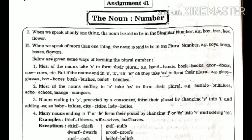First, when we speak of only one thing, the noun is said to be in the singular number. You already know singular noun and plural noun, because we have studied nouns and singular-plural before. For example: boy, tree, box, flower, etc.